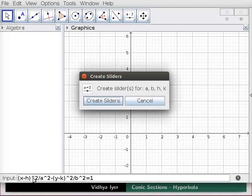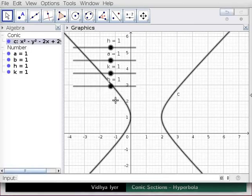A pop-up window asks if you want to create sliders for A, B, H and K. Click on Create Sliders. This creates number sliders for H, A, K and B. By default, they go from minus 5 to 5 and are set at 1. You can double click on the sliders to see their properties. A hyperbola appears in graphics view.